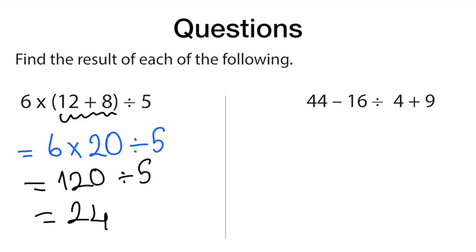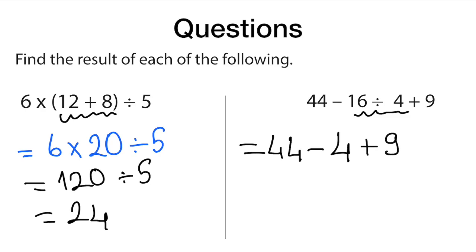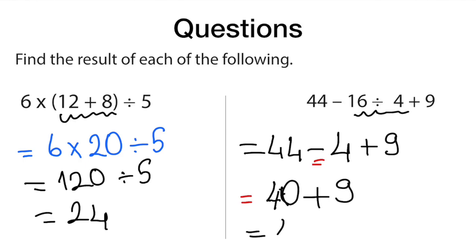Here there is subtraction, division, and addition. According to the rule, division comes first: 44 minus 16 divided by 4 — division first, 16 divided by 4 equals 4, then plus 9. Subtraction and addition are in the same level, but subtraction comes first, so we do 44 minus 4 equals 40, then plus 9, which makes 49.